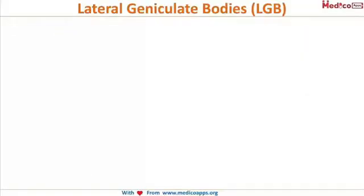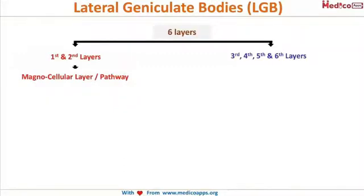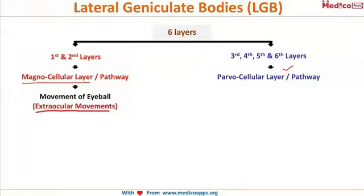The lateral geniculate body has six layers. The first and second layers are termed the magnocellular layer or the magnocellular pathway, and the third to sixth layers are termed the parvocellular layer or the parvocellular pathway. Regarding their functions, the magnocellular pathway is exclusively concerned with the movement of the eyeball — that is, extraocular movement.